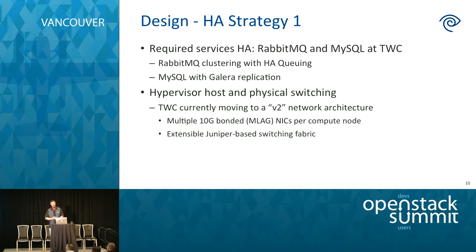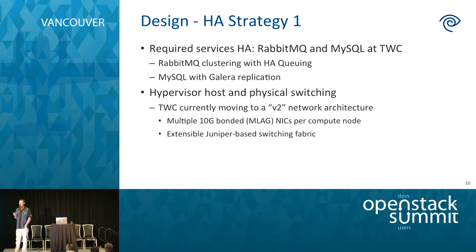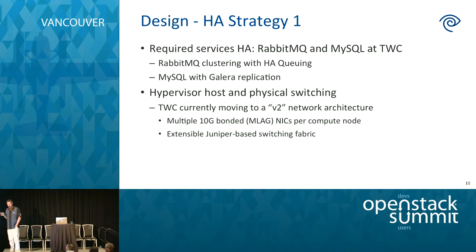Up front, one of the first things you have to do is figure out your HA strategy. There are required services behind the scenes — RabbitMQ and MySQL. Get these together before you put Neutron on top of them. If these are rickety or not in place in an HA manner, then your Neutron and networking is going to suffer. We experienced a few outages because of this.